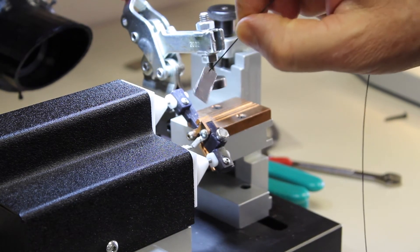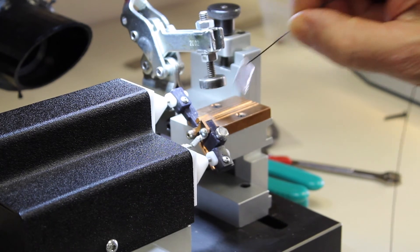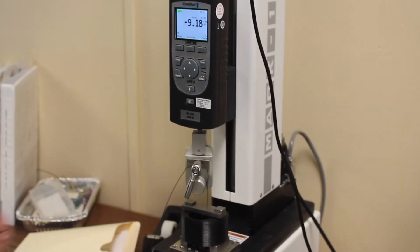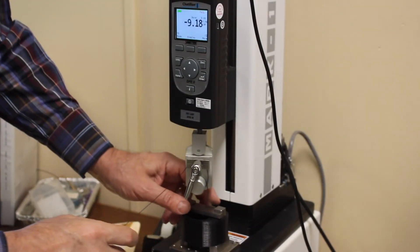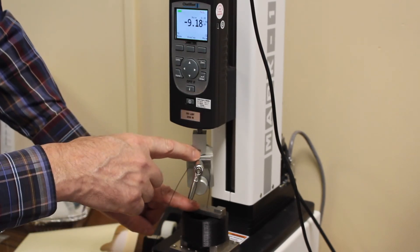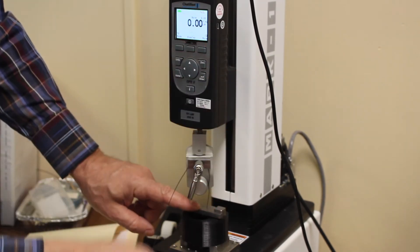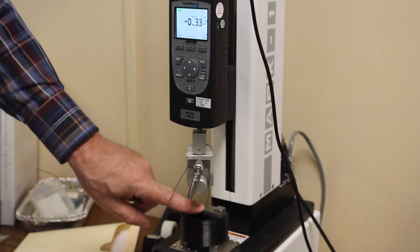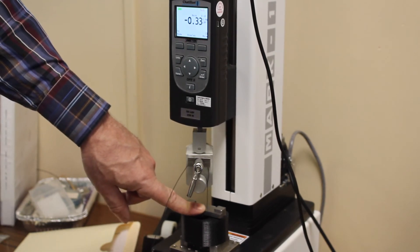We're going to take this over and do a pull test on it. We have the clamp mounted in the bottom part of the test stand. The wire is clamped here, zero the gauge, and do a pull test.